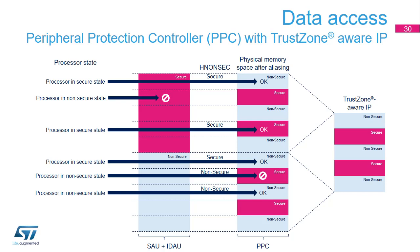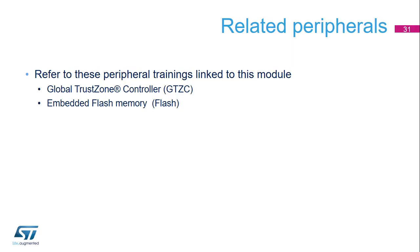When the processor accesses a TrustZone-aware IP containing both secure and non-secure address ranges, only secure software is permitted to access the secure parts of the peripheral using the secure alias. Both secure and non-secure software are permitted to access the peripheral registers through the non-secure alias. However, the security protection implemented in the TrustZone-aware peripherals prevents non-secure software from accessing secure address ranges. The TrustZone security module has relationships with the Global TrustZone Controller (GTZC), Embedded Flash Memory, and related modules.